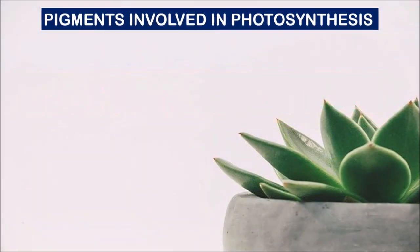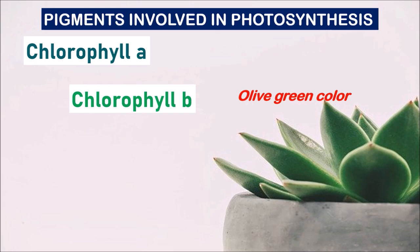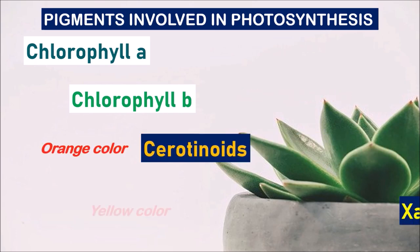Before going into the light reaction, let us list out the pigments involved in the light reaction. They are chlorophyll A, chlorophyll B, carotenoids and xanthophylls. These are the major pigments which are involved in the light reaction.